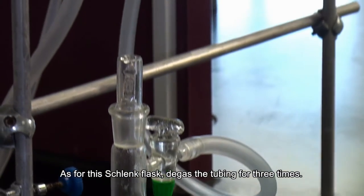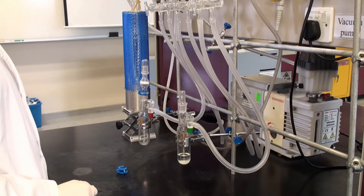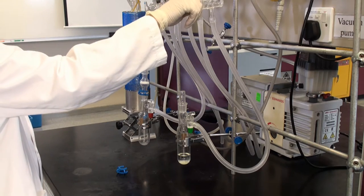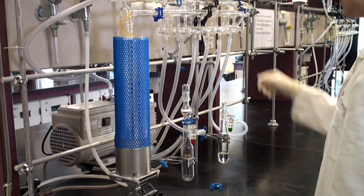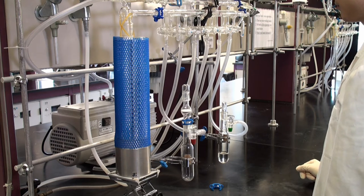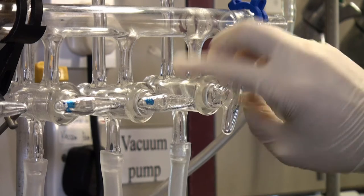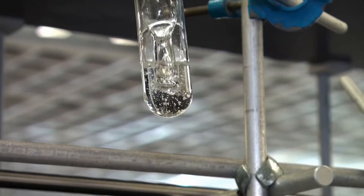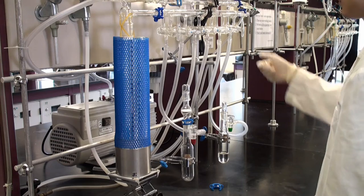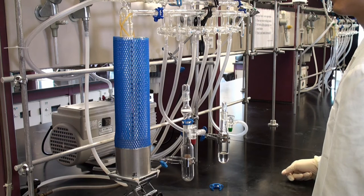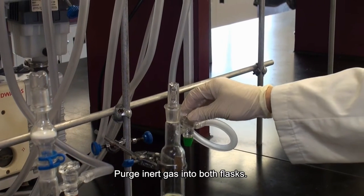As for this Schlenk flask, degas the tubing for three times. Purge inert gas into both flasks.